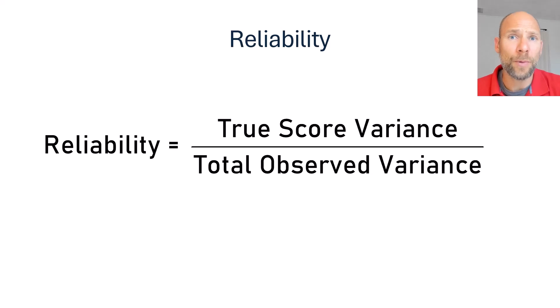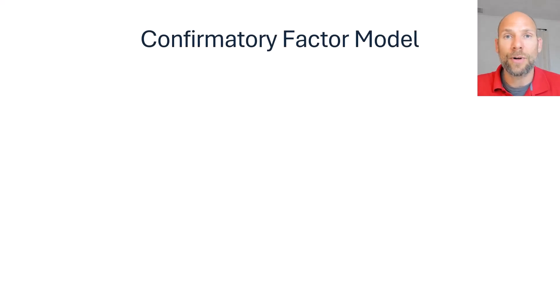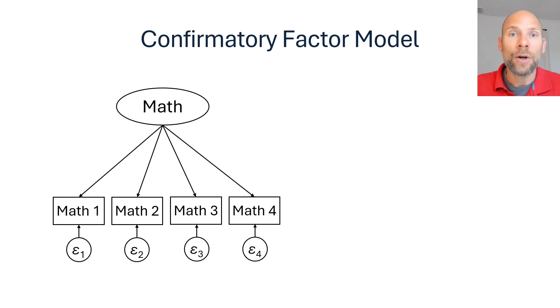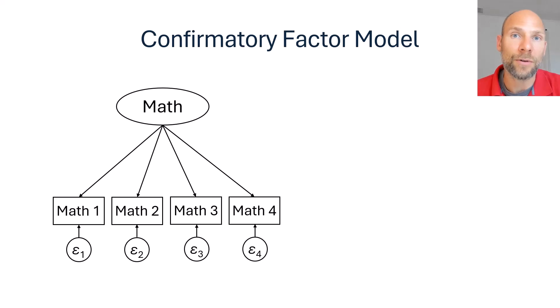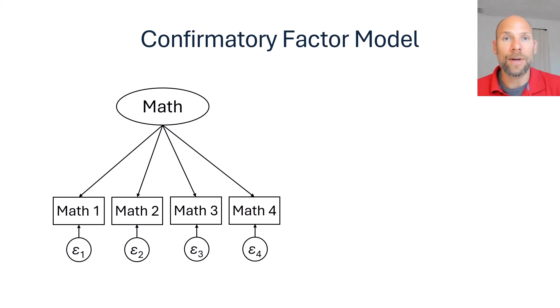To understand the difference between reliability and composite reliability, it's useful to look at this from the perspective of confirmatory factor analysis. In confirmatory factor analysis we can specify measurement models of classical test theory — for example, a single factor congeneric measurement model for a math test. Let's say we have a math test consisting of four subscales supposed to measure a unidimensional construct of math ability, and we fit a single factor CFA model to those four subscales.